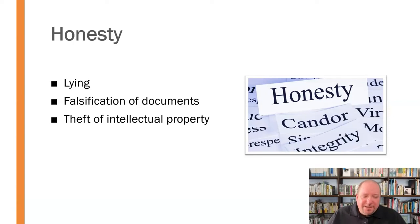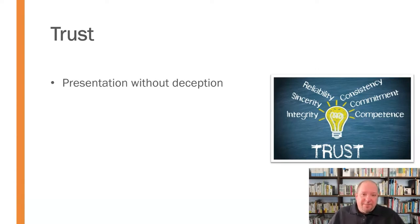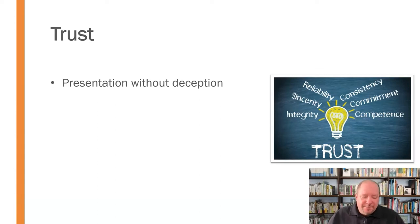Academic integrity and honesty also involves a degree of trust — trust between you and the institution, you and your classmates, you and your instructors. It involves trust in a variety of ways, such as, first of all, presentation without deception. When you're presenting information, whether that's spoken or written, however you're communicating something, we need to do so without deception. We need to leave deception at the door and present information honestly and with full candor.